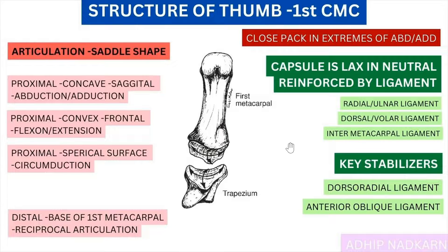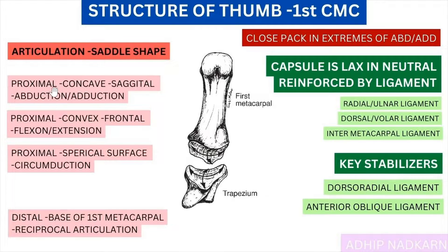Starting with the articulation — it is a saddle shape articulation, which means it has both a concave and a convex surface. You can see over here the concave surface as well as the convex surface for articulation on the proximal end, and again that is reciprocated at the distal end. The proximal articulation has two parts: a concave part and a convex part.